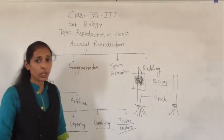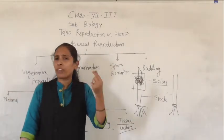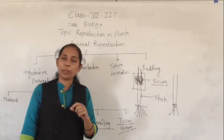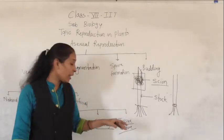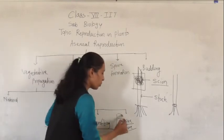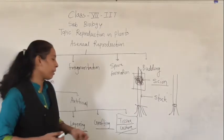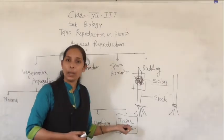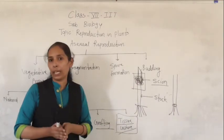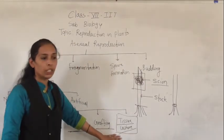The next method is tissue culture. In this technique, we produce a new plant by using a very tiny tissue of the plant. From the tiny tissue of the plant, we produce a new plant, but this method takes place in a lab. Tissue culture develops new plants with the help of tiny plant tissue in laboratory conditions, in an infection-free area or infection-free medium.